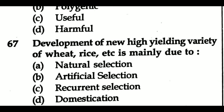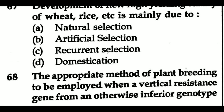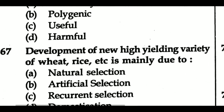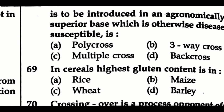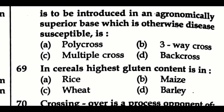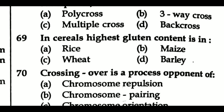Question 67: Development of new high yielding variety of wheat, rice etc. is mainly due to — Option A: natural selection, Option B: artificial selection, Option C: recurrent selection, Option D: domestication. Question 68: The appropriate method of plant breeding when a vertical resistance gene from an otherwise inferior genotype is to be introduced into an agronomically superior but disease susceptible base is — Option A: polycross, Option B: three-way cross, Option C: multiple cross, Option D: back cross. Question 69: In cereals, highest gluten content is in — Option A: rice, Option B: maize, Option C: wheat, Option D: barley.